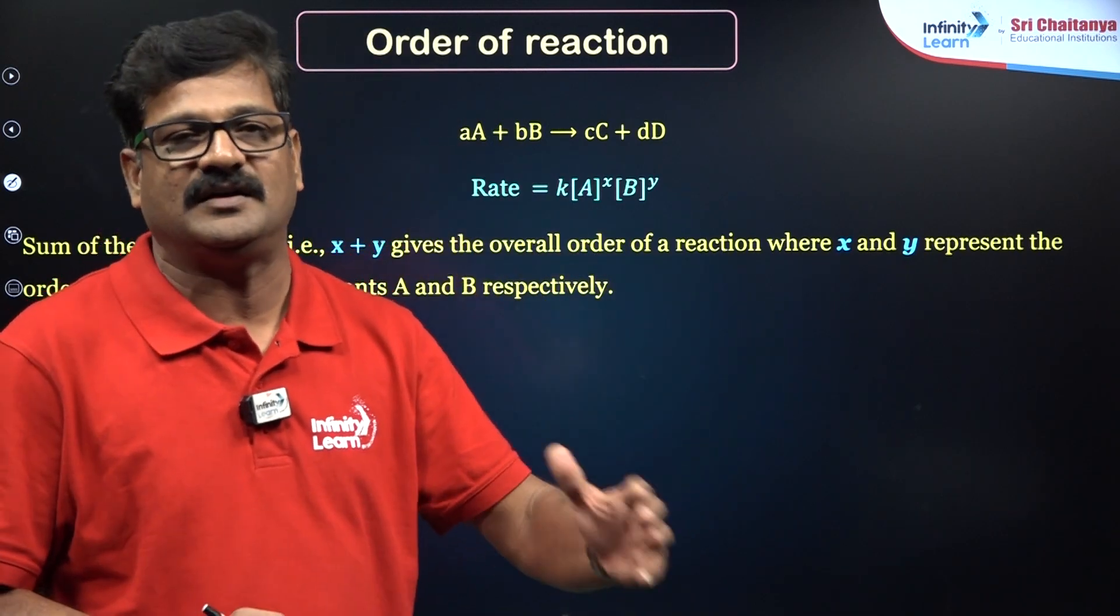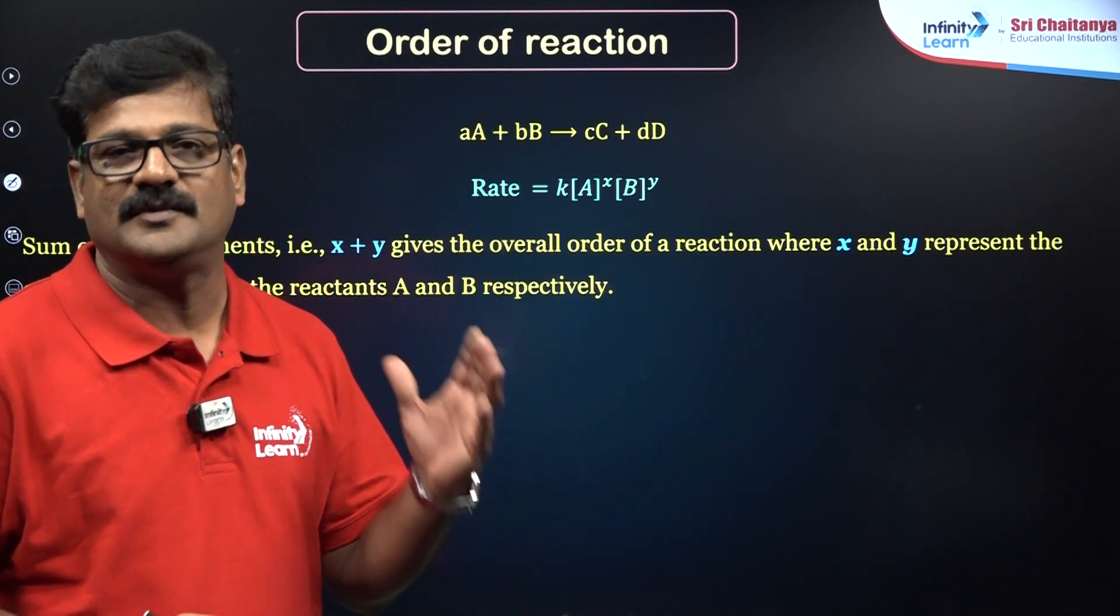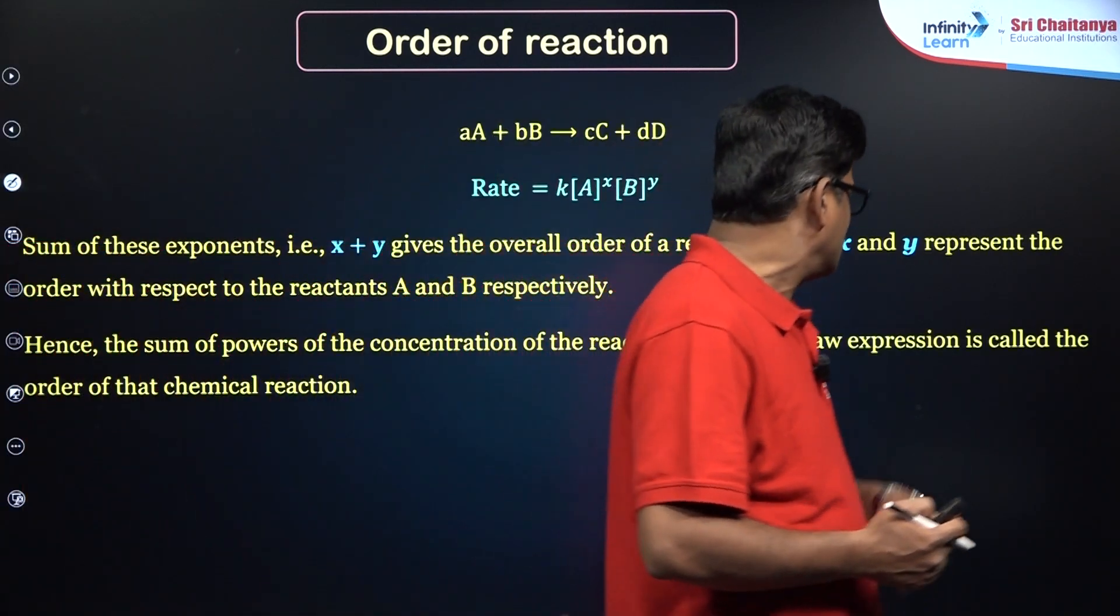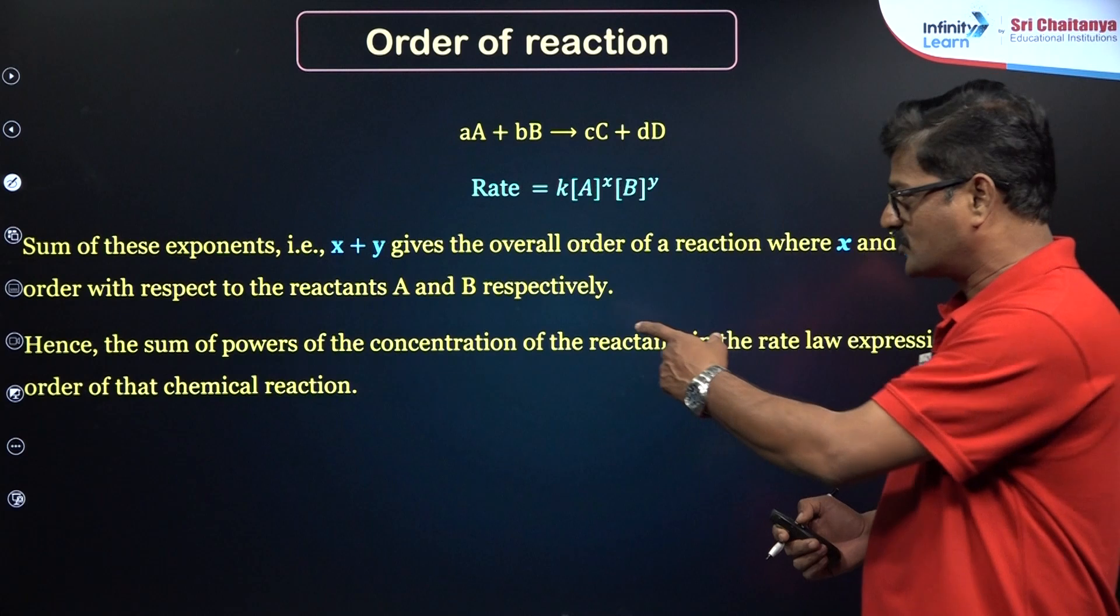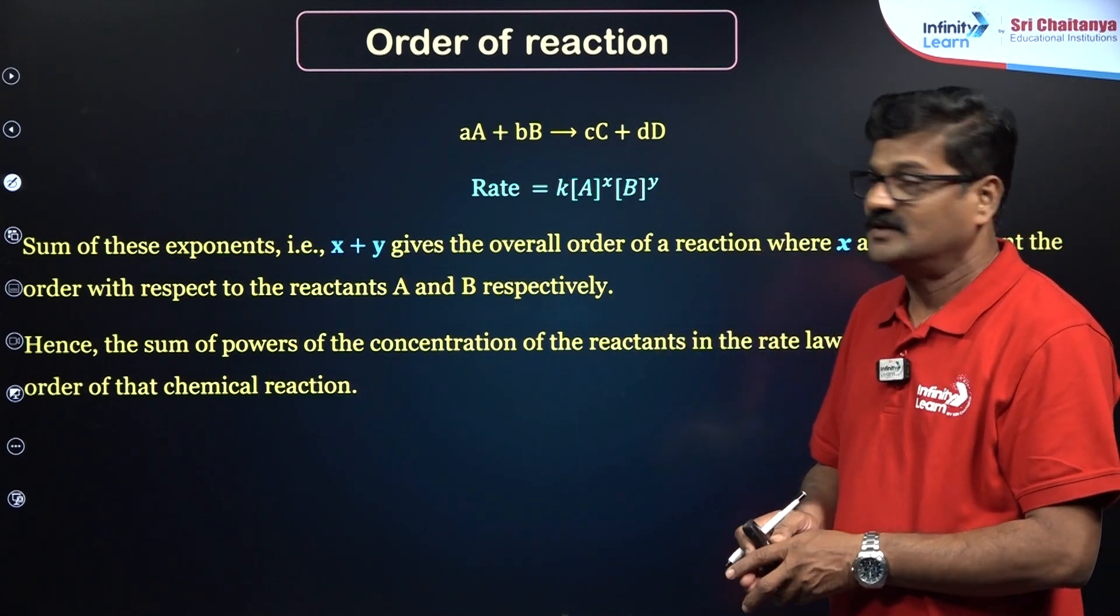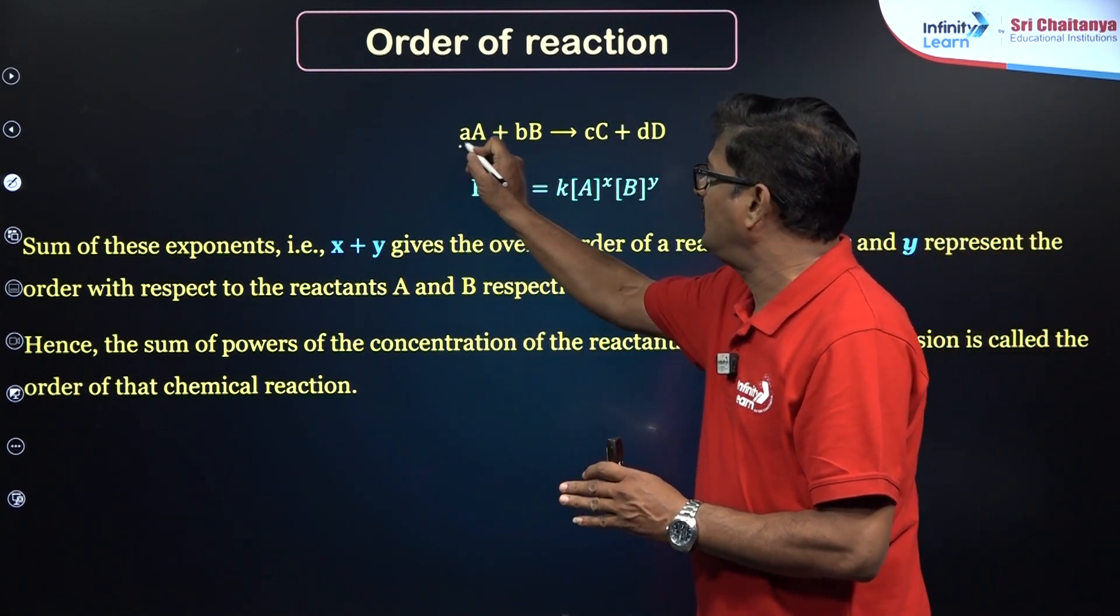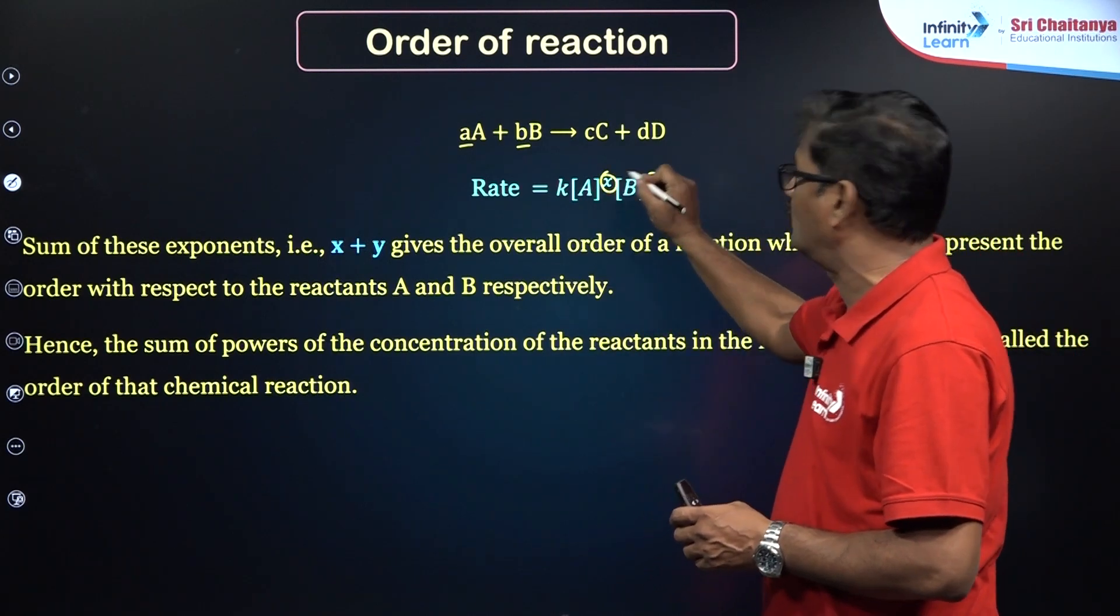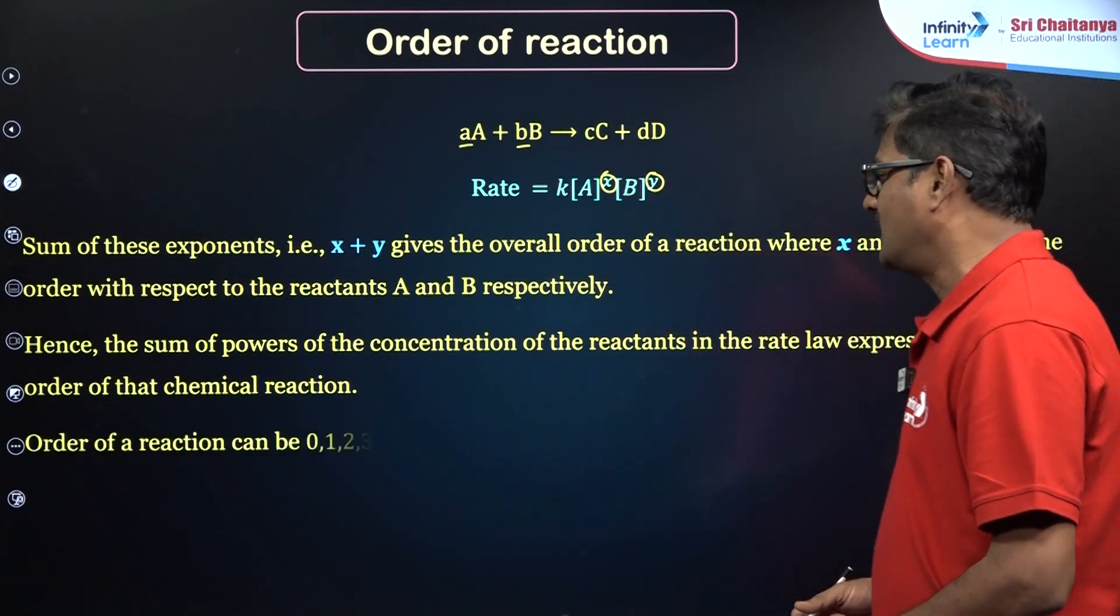Also, the sum of the powers of the concentration of the reactants in the rate law expression is called the order of a reaction. You cannot simply say a + b is the order of a reaction; rather, you say X + Y is the order of a reaction.